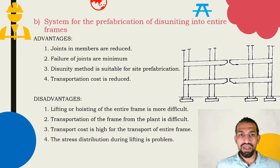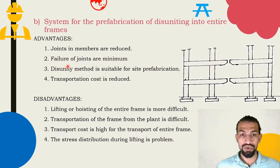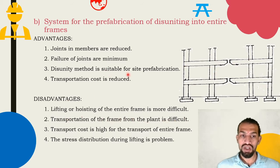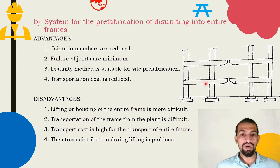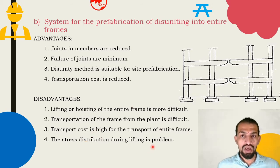Advantages of Method 2: joints in the members are reduced, failures of joints are minimum because of not disuniting, and transportation cost is reduced. Disadvantages: lifting and hoisting of the entire frame is more difficult. Transportation of a frame from the plant is very difficult and costly, though material cost is less. The stress distribution during lifting is more problematic as the acting stresses are harder to determine.